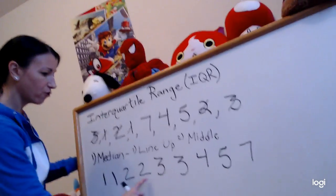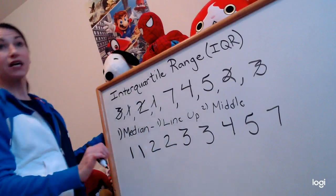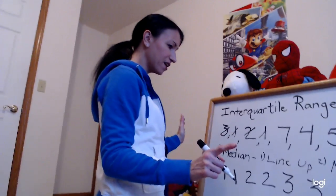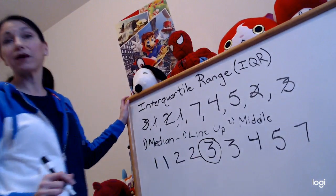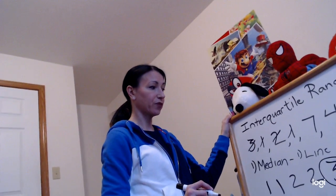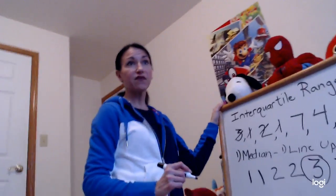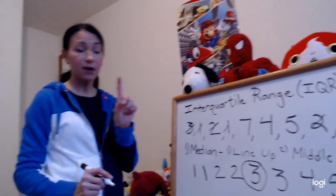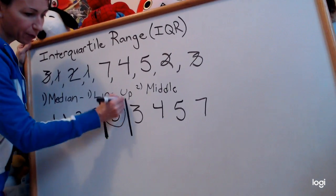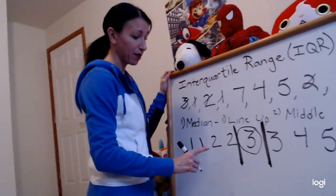One, two, three, four, five, six, seven, eight, nine — got them. Since there are nine numbers, there's only going to be one number in the middle. Our middle number is a three. Now we have to find our lower middle and our upper middle. When there's one number in the middle, it doesn't count — we separate the lower and the upper around that one middle number.